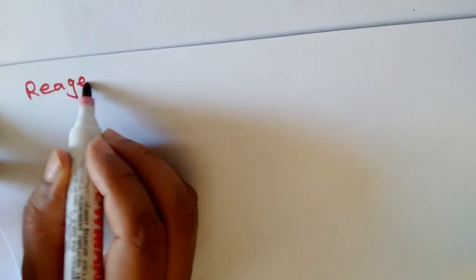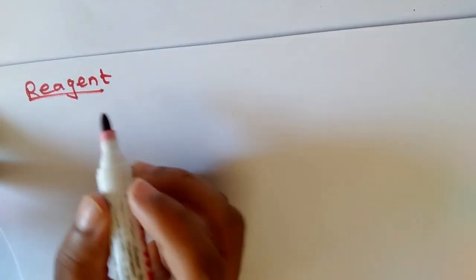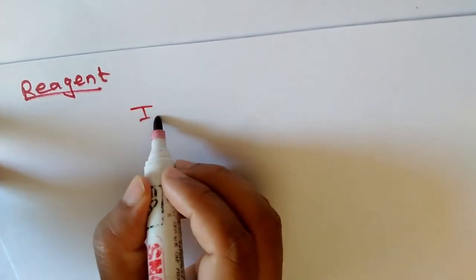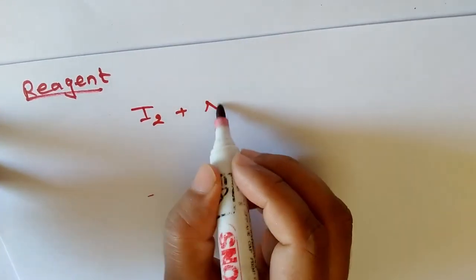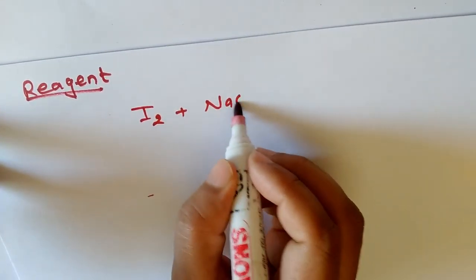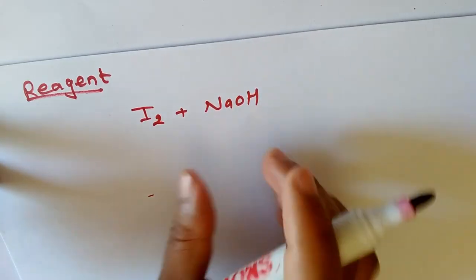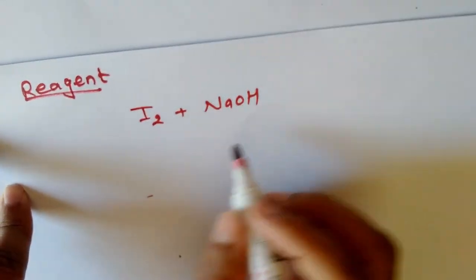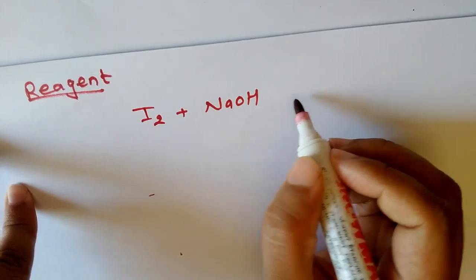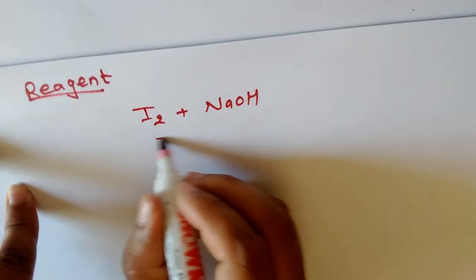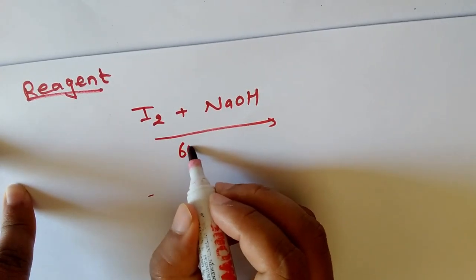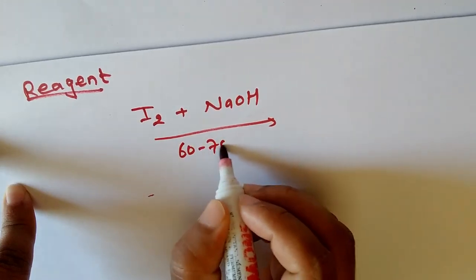The reagent used for the Iodoform test is I2 plus NaOH, and the reaction is carried out in the presence of heat at around 60 to 70 degrees Celsius.